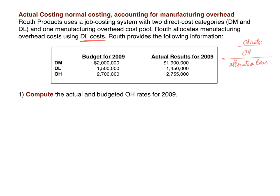The way we calculate an overhead rate is: overhead divided by the allocation base. For the actual rate, we use actual overhead of $2,755,000 divided by the actual allocation base. Since the allocation base is direct labor cost, and actual direct labor cost was $1,450,000, we're dividing dollars by dollars, giving us a percentage. The actual rate is 1.9, or 190%.